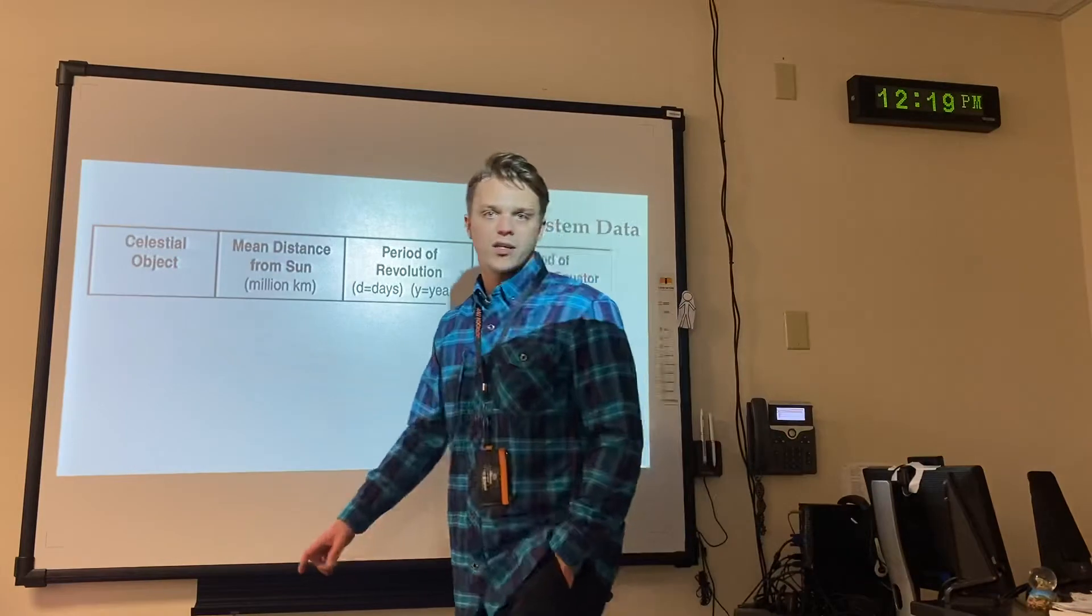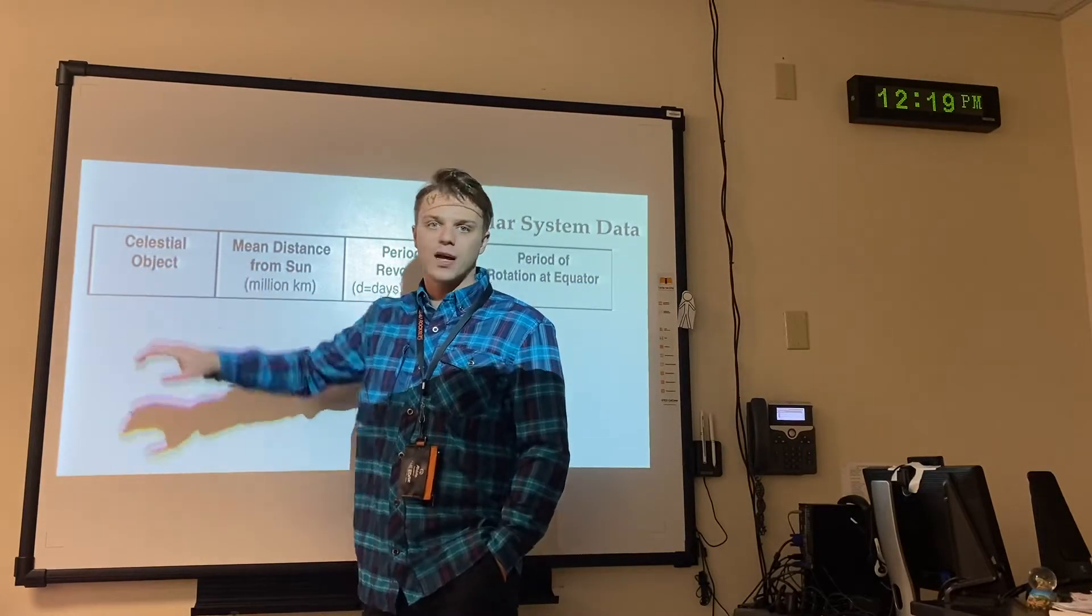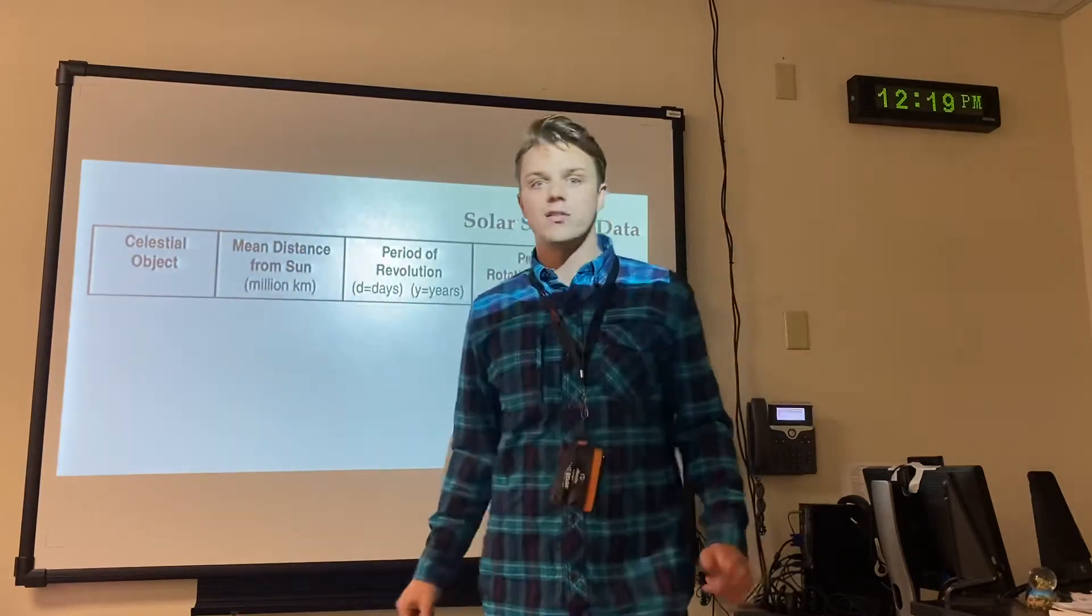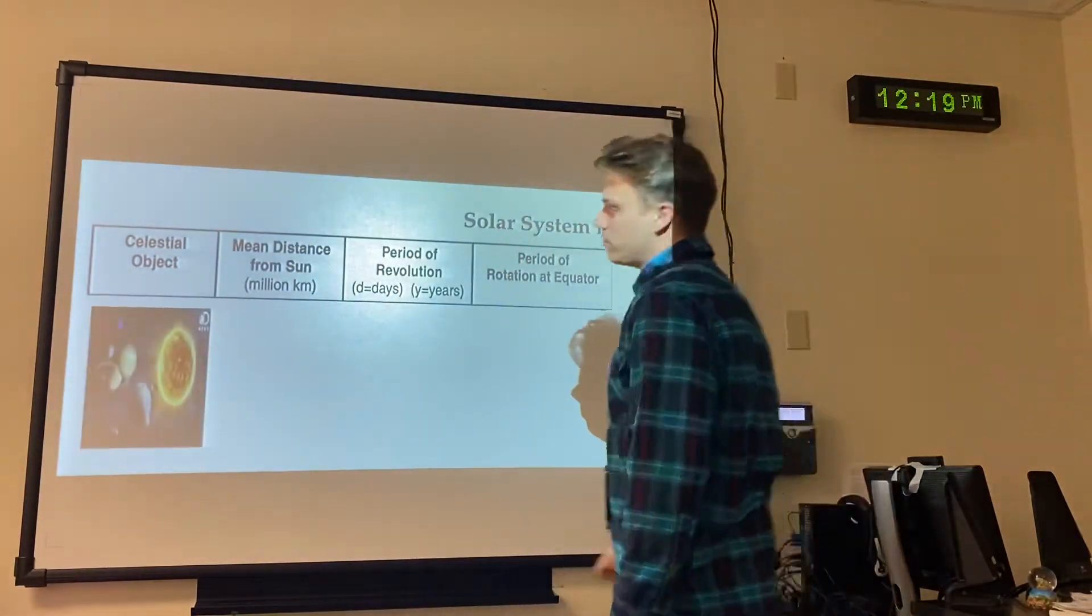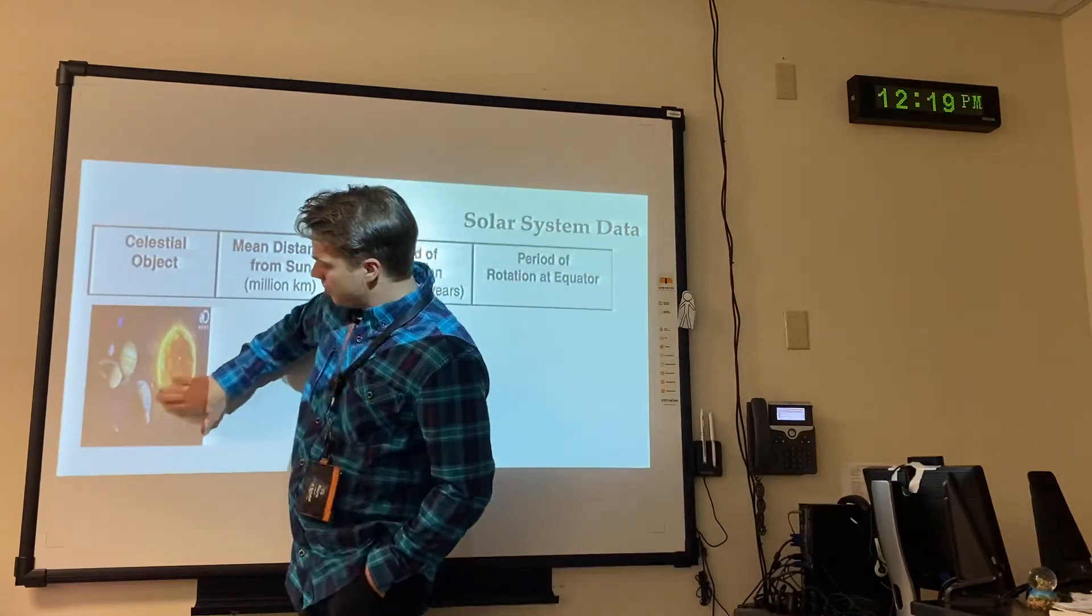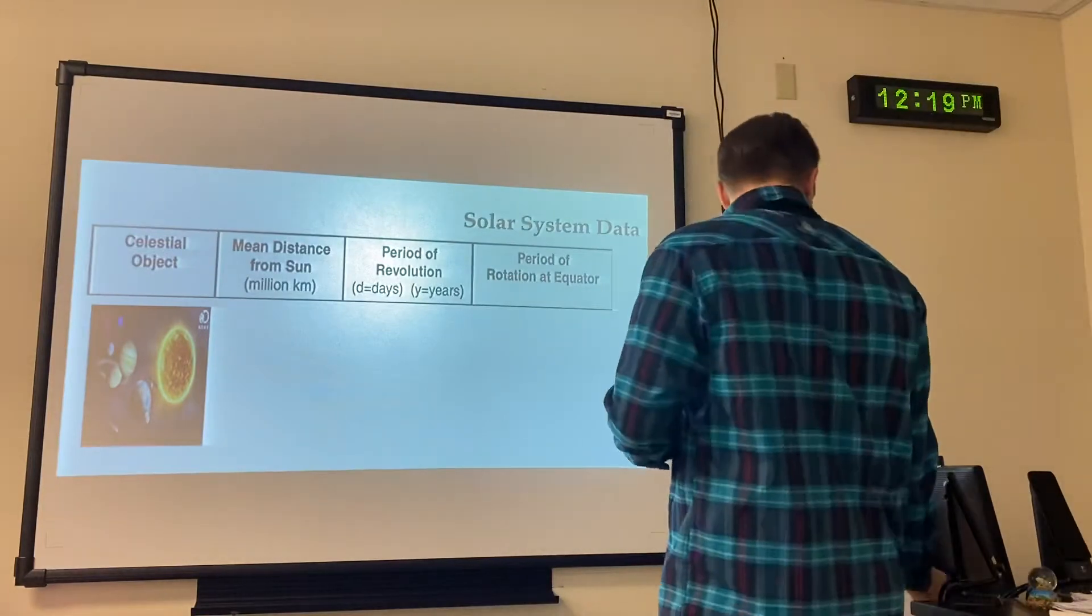Celestial object. Celestial just means space object. So a space object is something huge that's out in space, or big and out in space, and that includes the Sun, the planets, asteroids, comets, galaxies. These are all celestial objects.